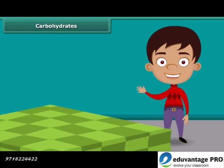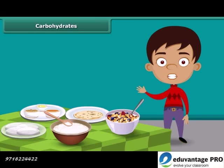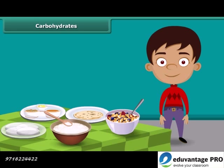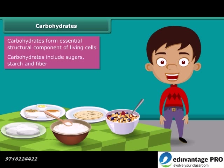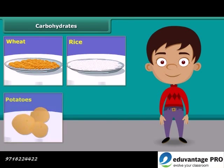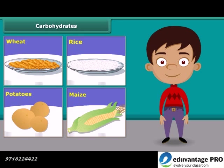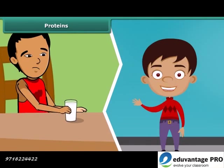Each food item contains all nutrients in different amounts and each nutrient plays a different role in the body. First, carbohydrates — carbohydrates form an essential structural component of living cells and are the main source of energy for animals. Carbohydrates include sugars, starch, fiber, etc. They are mainly found in wheat, rice, potatoes, corn, and maize.